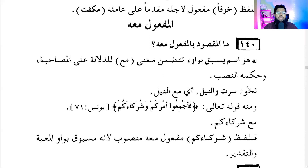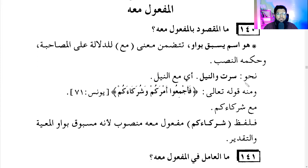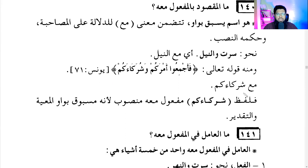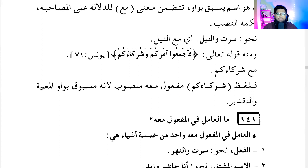Its ruling is mansub. For example: 'I traveled along the Nile' — so 'with the Nile,' the word Nila will have fatha. And from it is the saying of Allah: 'Fa-ajma'u amrakum wa shuraka'akum' — gather your matter with your partners. This is maf'ul ma'ahu, mansub with fatha because it is mansub by wawil ma'iyyah. This waw is called wawul ma'iyyah.